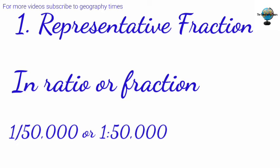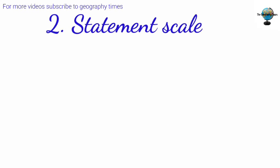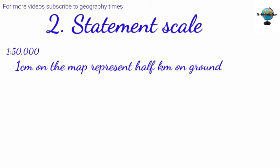The statement scale is when you express map scales in words, and it refers to a written statement. For example, if the scale of a map is 1:50,000, you write that one centimeter on the map represents half a kilometer on the ground.